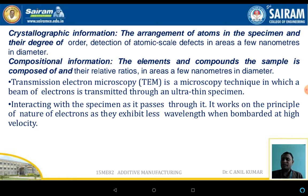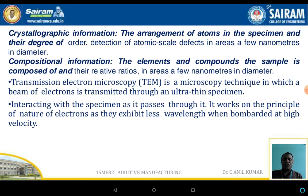The compositional information refers to the elements and compounds the sample consists of, and also the ratio at which they have been mixed. The proportionate distribution of the particles — whether it is even or not throughout the specimen — can also be very easily found out using these methods.